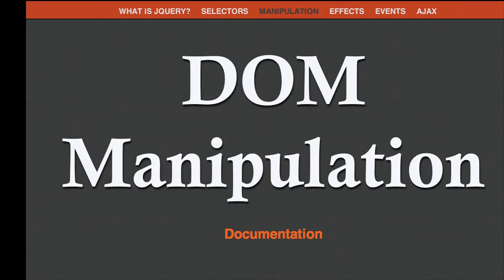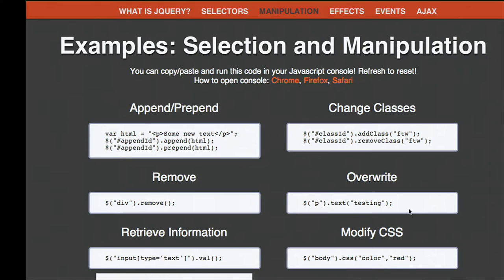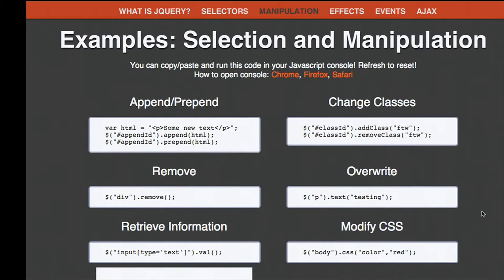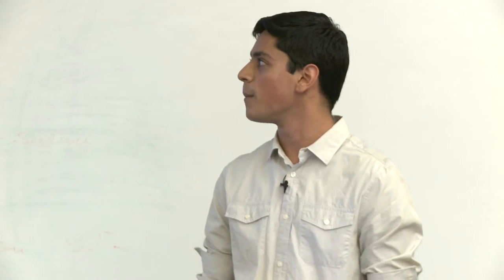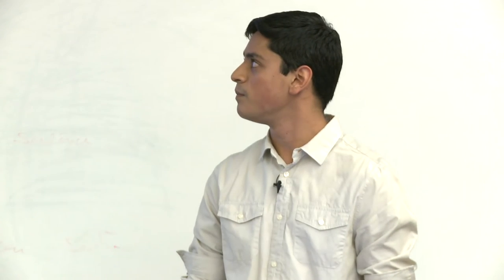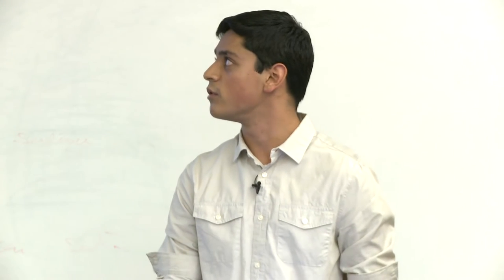The next thing is DOM manipulation. After we select elements, we want to actually do stuff with them. We're going to select elements on this presentation and manipulate them using jQuery. Because this presentation is implemented using jQuery, we have access to the jQuery library and can use those functions within this code.